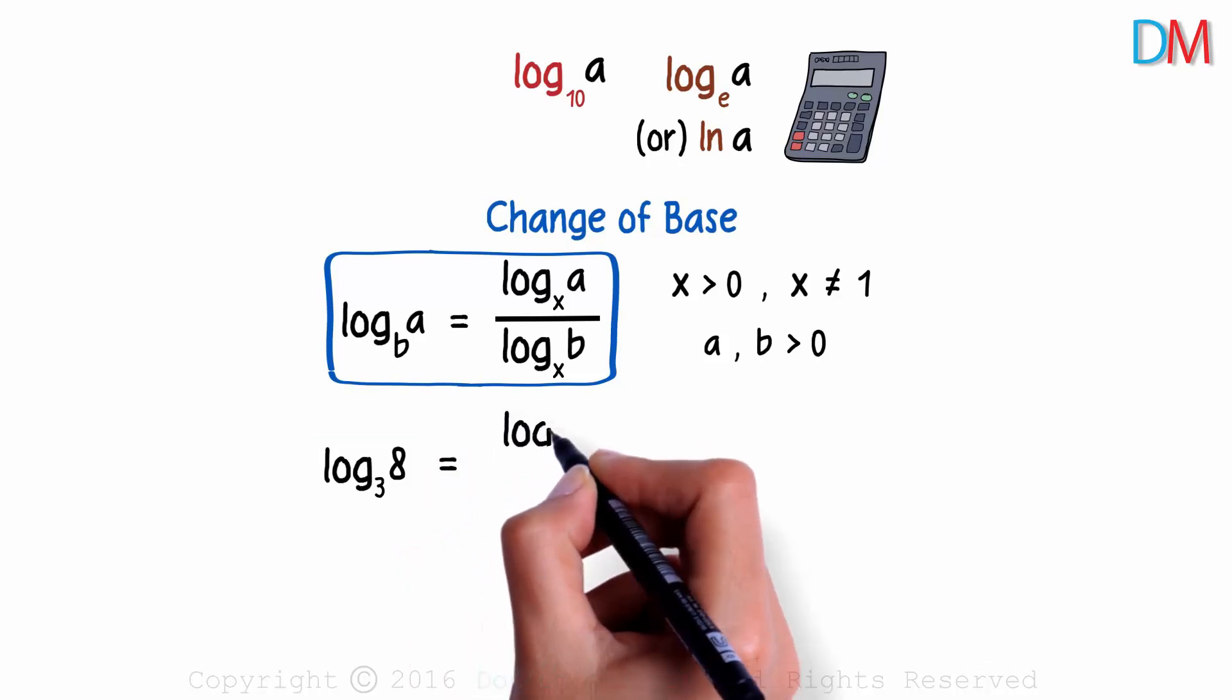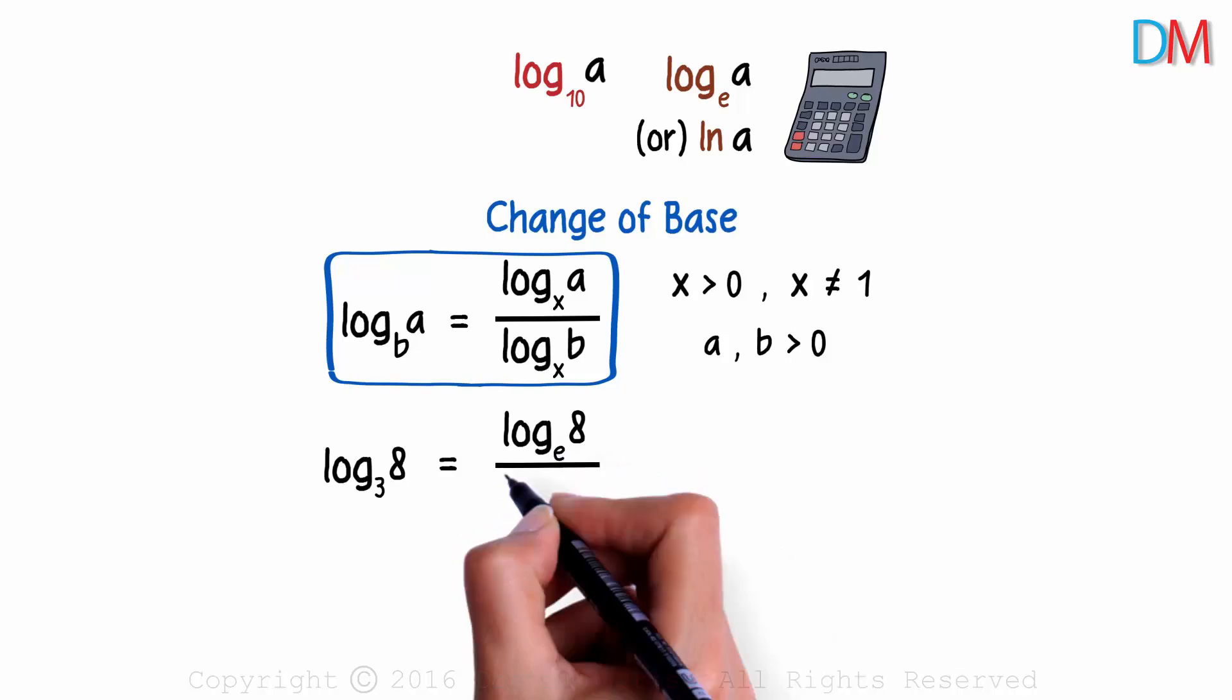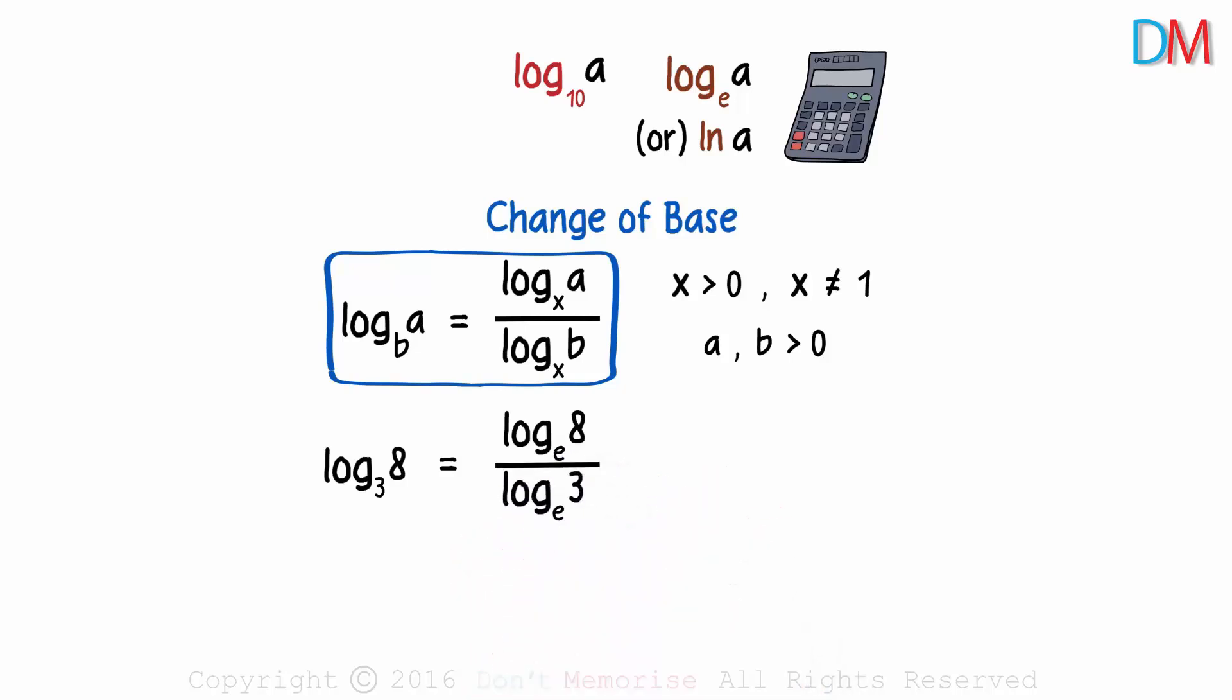Because the calculator can't really help us with this, we can write it as log of 8 to the base E over log of 3 to the base E. The argument was written in the numerator, the base in the denominator, and the common base was chosen as E. The calculator can give us these two values.